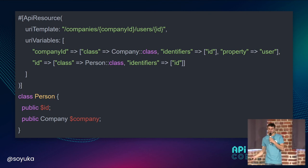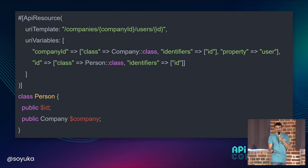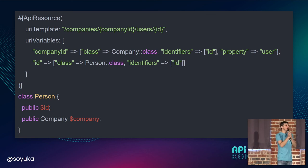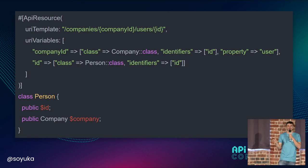For example, a company has a property user, which is the company class. So this helps us know, inside the resource, how things are linked together.